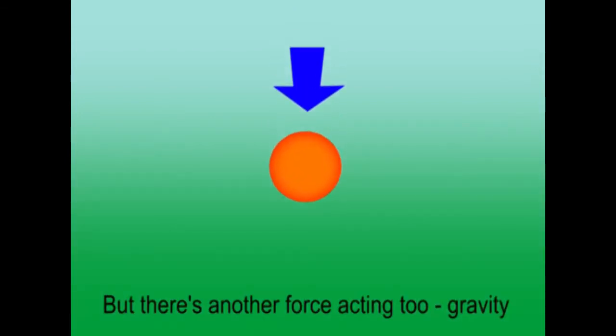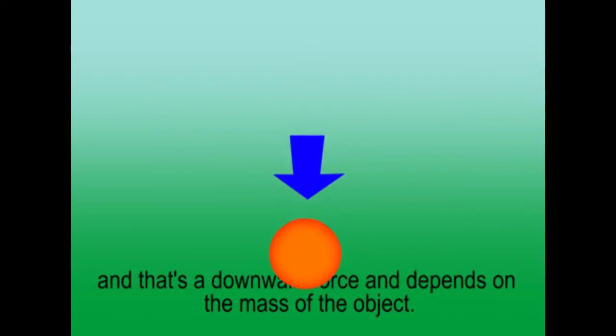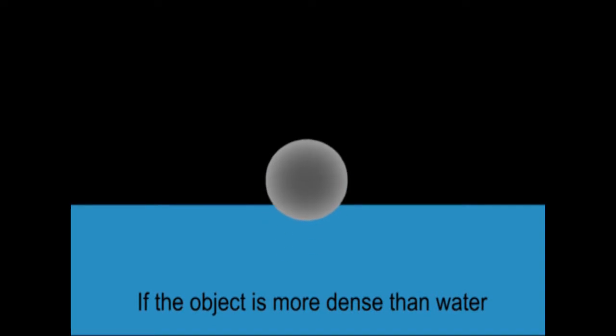But there is another force acting too: gravity, and that is a downwards force and depends on the mass of the object. If the object is more dense than water, gravity wins and it sinks. If the object is less dense than water, buoyancy wins and it floats to the surface.